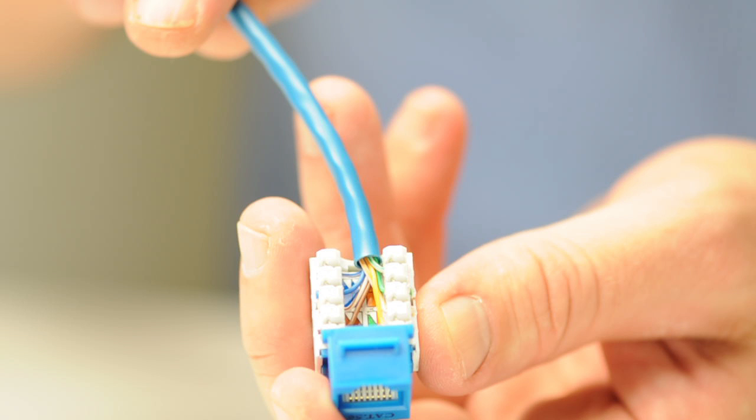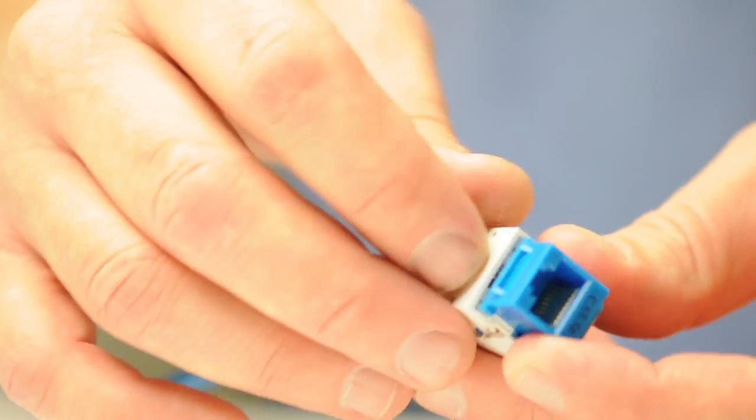Here is a properly installed Cat5e Keystone Jack. The last step is to push on the stuffer cap to protect the cables and ensure that you don't lose connection.